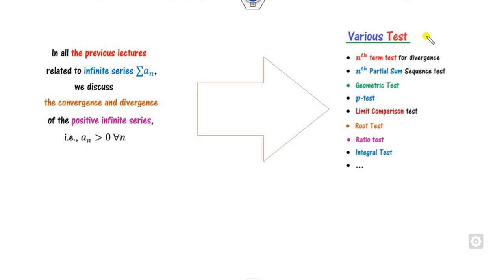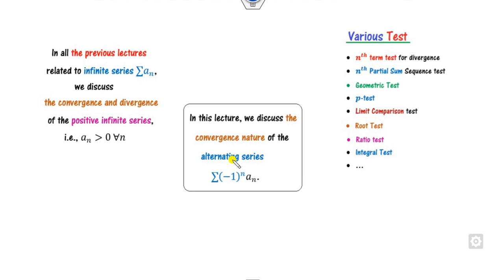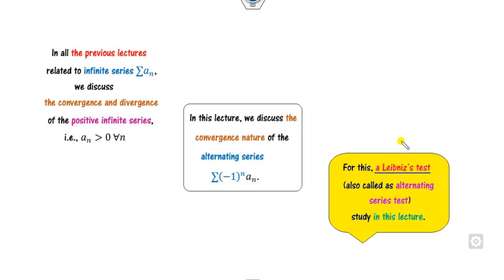What we have discussed so far: in our previous videos we covered all those tests which are applicable only for positive infinite series. But in this lecture, we will see how to determine the convergence nature of alternating series, that is series involving (-1)^n. For this, there is a test called the Leibniz test, also called the alternating series test, which we will discuss in this lecture.